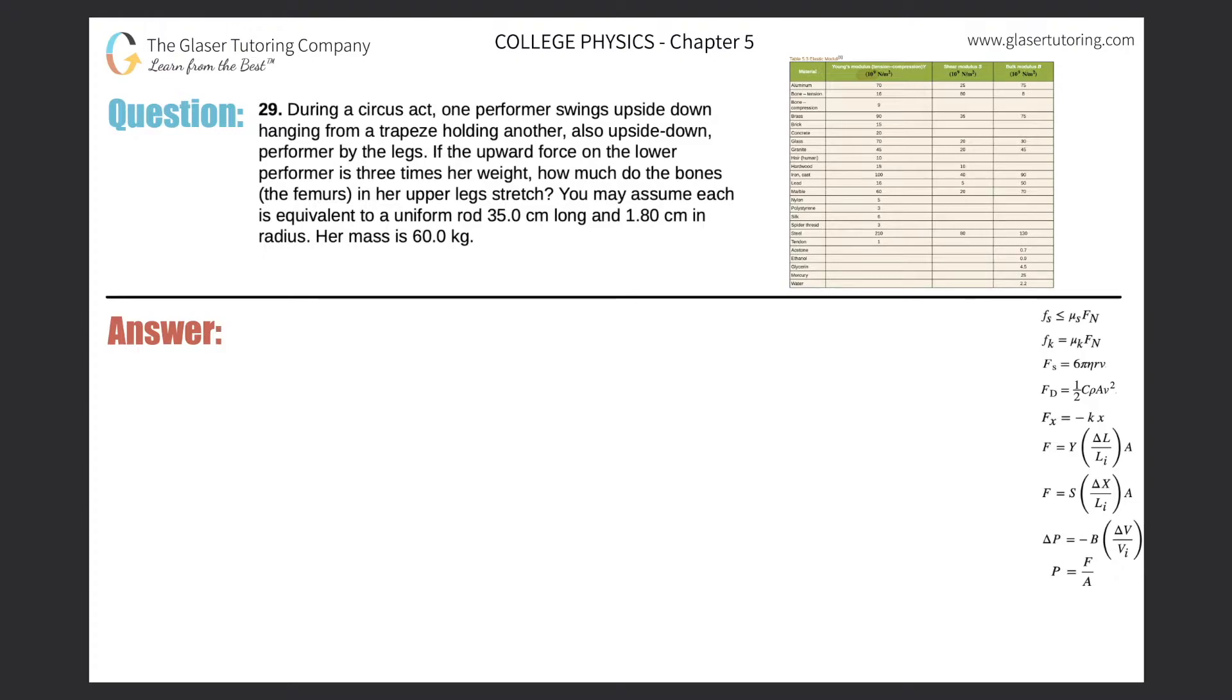Number 29. During a circus act, one performer swings upside down hanging from a trapeze holding another, also upside down, performer by the legs. If the upward force on the lower performer is three times her weight, how much do the bones, meaning the femurs, in her upper leg stretch? You may assume each is equivalent to a uniform rod of 35 centimeters long and 1.8 centimeters in radius. Her mass is 60 kilograms.